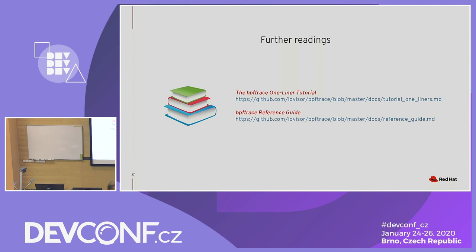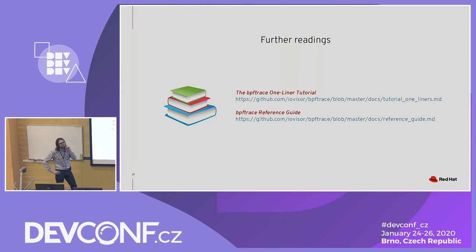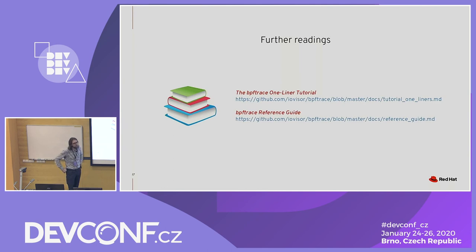Any more questions? — Continuing from the first question about tracing everything in the system: is it possible to attach BPF trace to a specific container or cgroup and restrict it to that? — Well, you can trace anything that's on your kernel, at least for kprobes and similar, but I don't know much about containers. I know there are some functions about cgroups, but I don't know what containers really have.